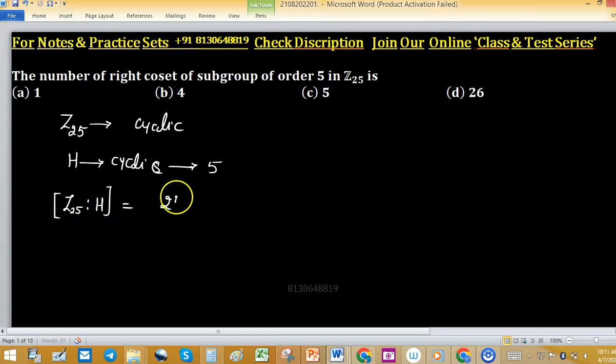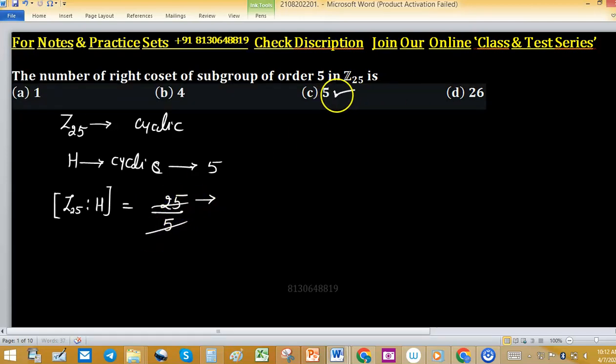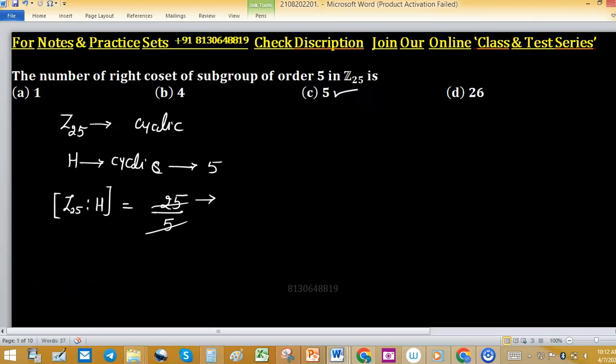We can find by 25 upon 5 because the order of Z25 is 25 and order of H is 5. After cancellation we have 5, so option C is correct. Thank you.